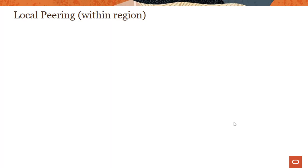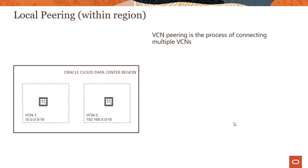Let's start with local peering. As the name suggests, local peering basically means you are connecting multiple VCNs within the same region. The graphic shows a region Oracle Cloud data center with VCN 1 having an address space of 10.0.0.0/16 and VCN 2 with an address space of 192.168.0.0/16. Connecting these two VCNs is called local peering.